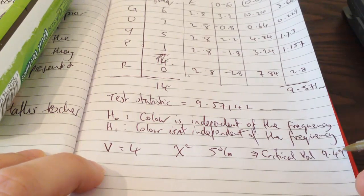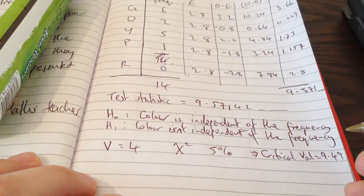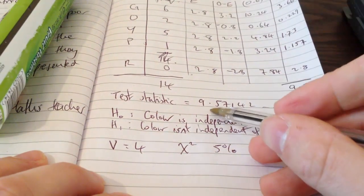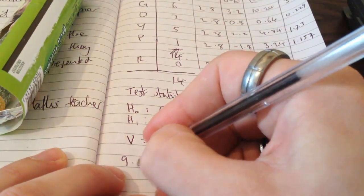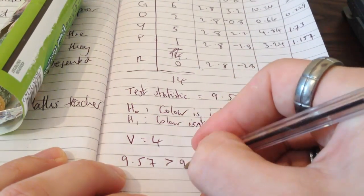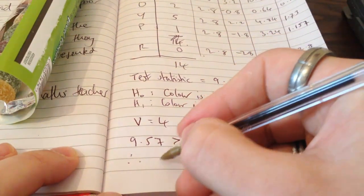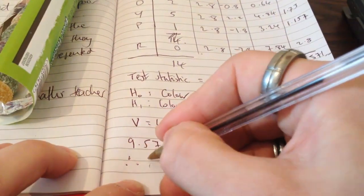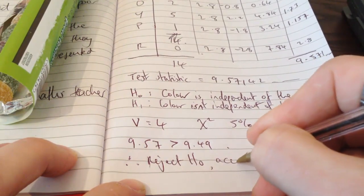And I get a critical value of 9.49. Anything 9.49 or bigger is reason to doubt the H0. My test statistic is bigger than that. So this sentence is a little bit obvious, but 9.57 is bigger than 9.49. So therefore I am going to reject H0 and accept H1.